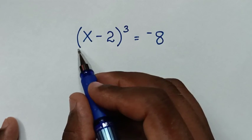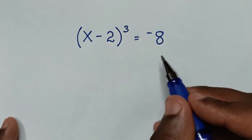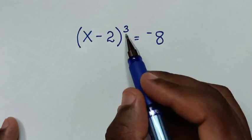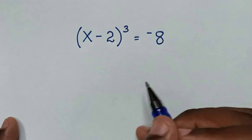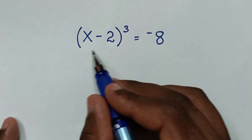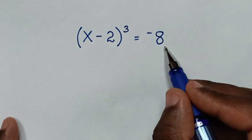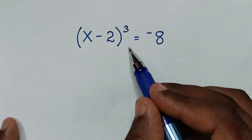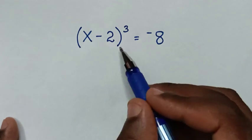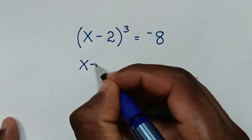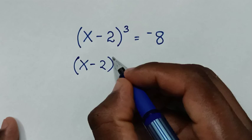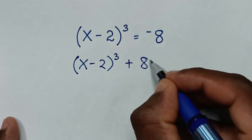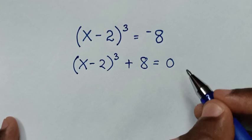Hello, you are welcome to solve this math problem which is (x - 2)³ = -8. To find the values of x from this equation, in the first step we'll take this negative 8 to the left side. So it will be (x - 2)³, and negative 8 taken to this side will be plus 8, is equal to 0.